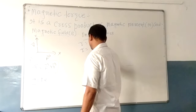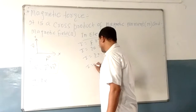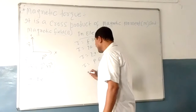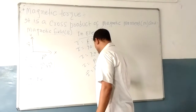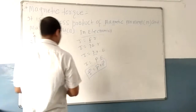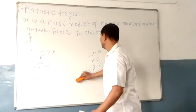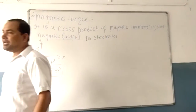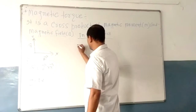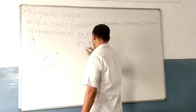In electrostatics, torque is equal to Q·E. Torque equals F·r, which equals Q·r·E. This charge into the distance between the charges is called the electric dipole moment. In vector form, torque is the cross product of electric dipole moment P and electric field E. So in electrostatics, torque is a cross product of electric dipole moment and electric field.